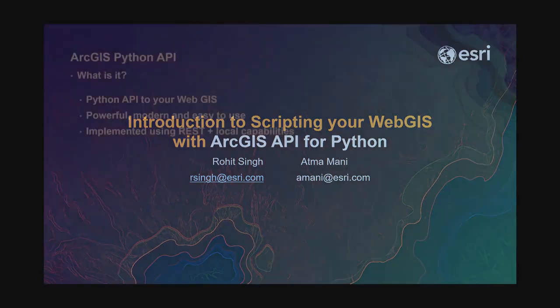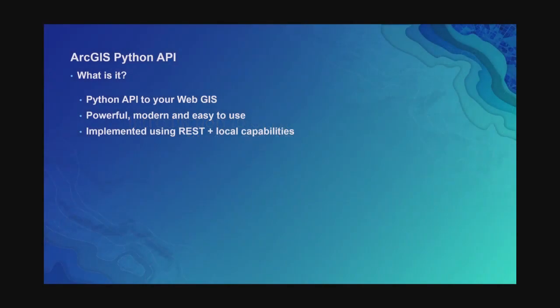It's powerful — it has all the analytical capabilities of the web GIS platform. It lets you do things like geoprocessing, geocoding, network routing and directions. In ArcGIS Enterprise, it lets you do raster analysis using Image Server, big data analysis using the GeoAnalytics Server. You've got the ArcGIS Online spatial analysis tools — all of the analytical capabilities are there.